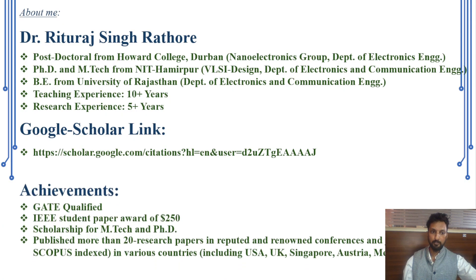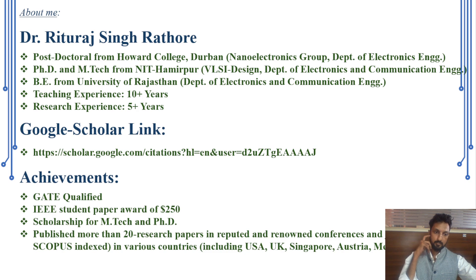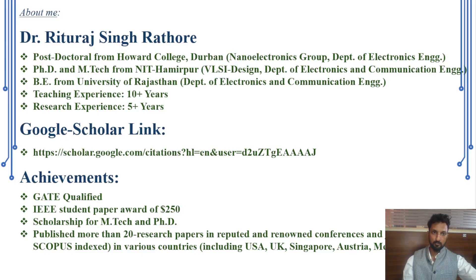You can find out more about my achievements. I received the IEEE Student Paper Award of $250 USD. Apart from that, I received sponsorship for my Masters, Doctorate, and Postdoctorate. I have published more than 20 research papers in renowned conferences and journals indexed in Scopus and SCI, published in various countries like USA, UK, Singapore, Austria, Mexico, Thailand, and others. So this is a brief introduction about me.